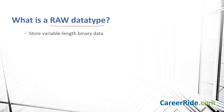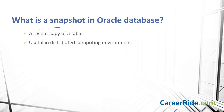What is a RAW data type? A RAW data type is used to store variable-length binary data or byte strings. What is a snapshot in Oracle database? A recent copy of a table or a subset of rows or columns of the table is called a snapshot in Oracle. A snapshot is more useful in a distributed computing environment and helps in replicating data dynamically between distributed databases.